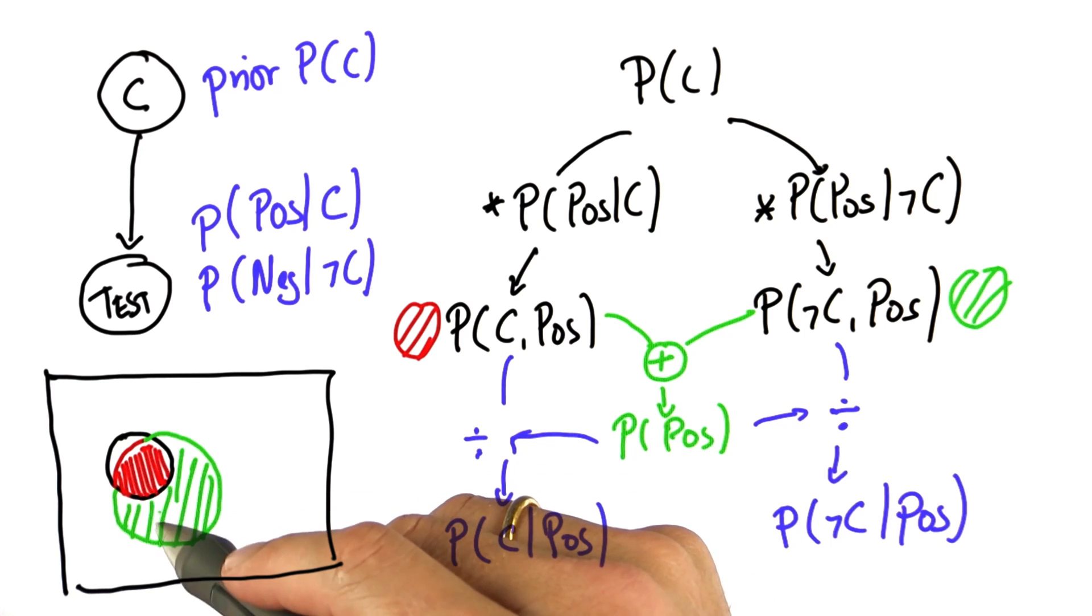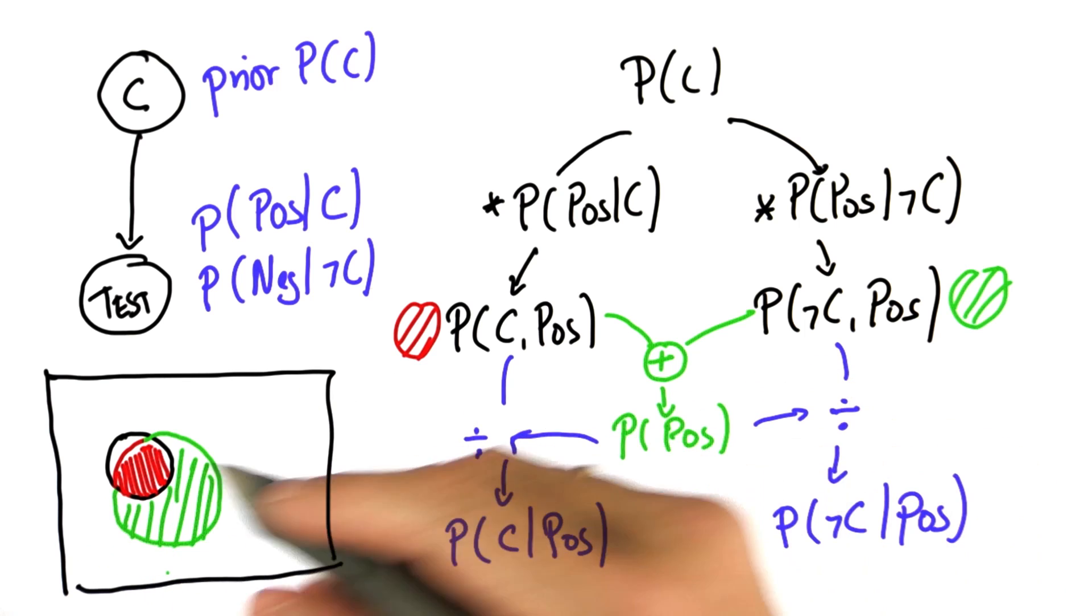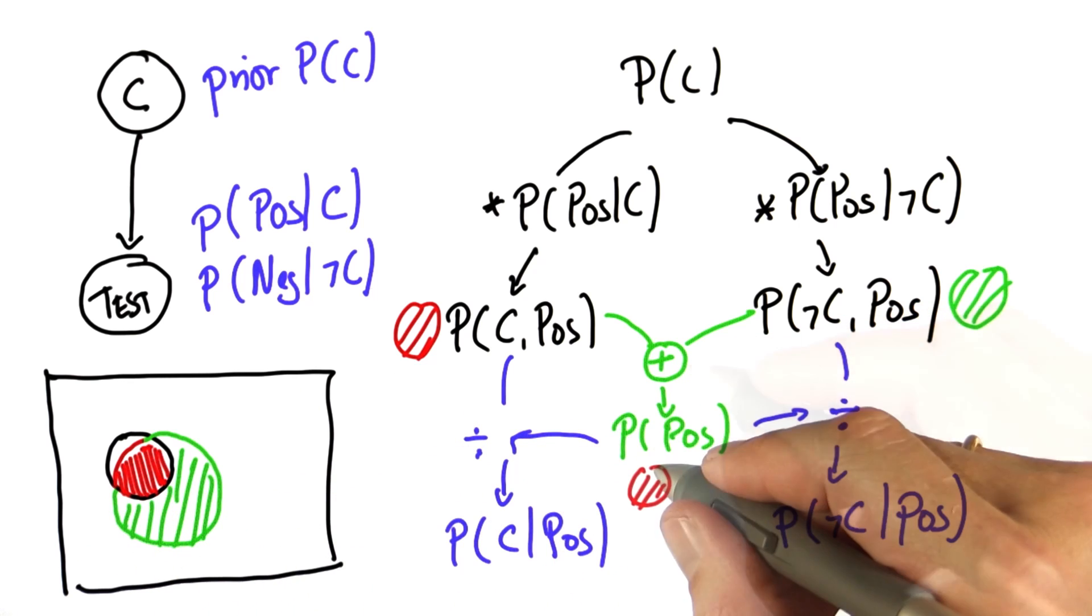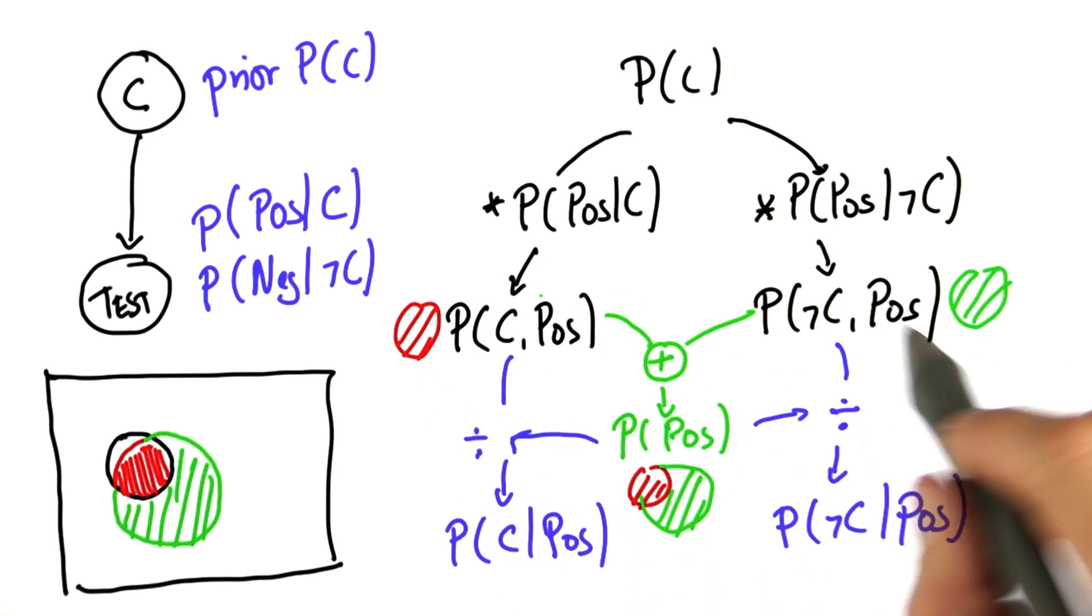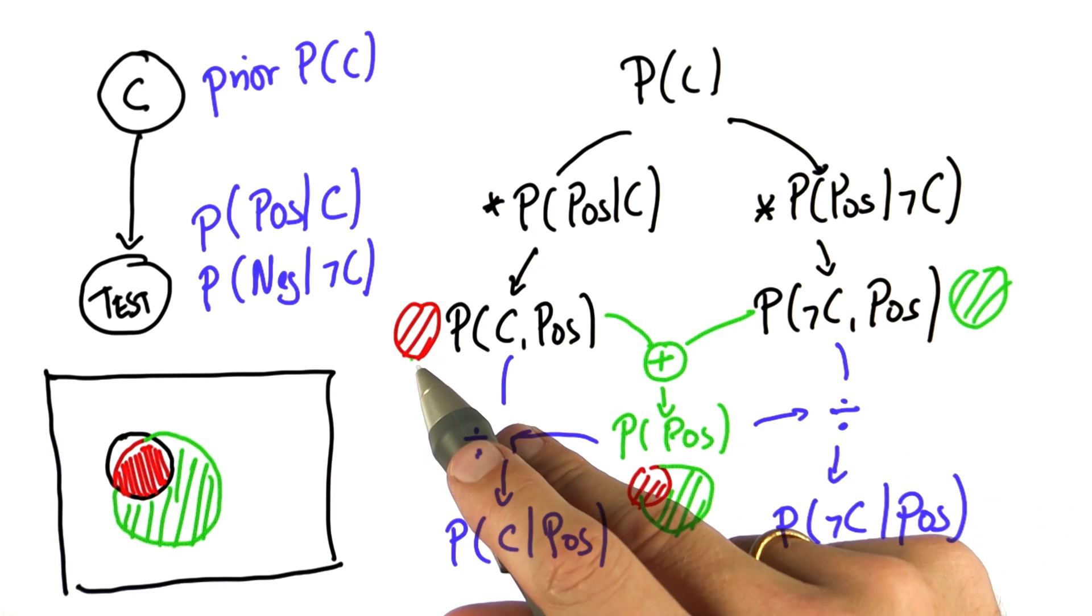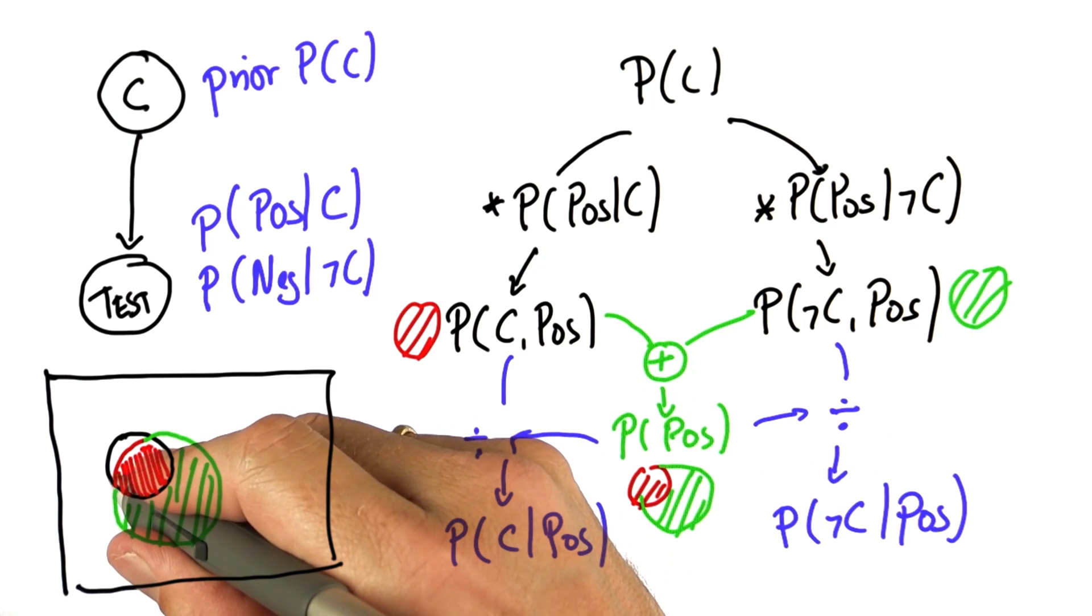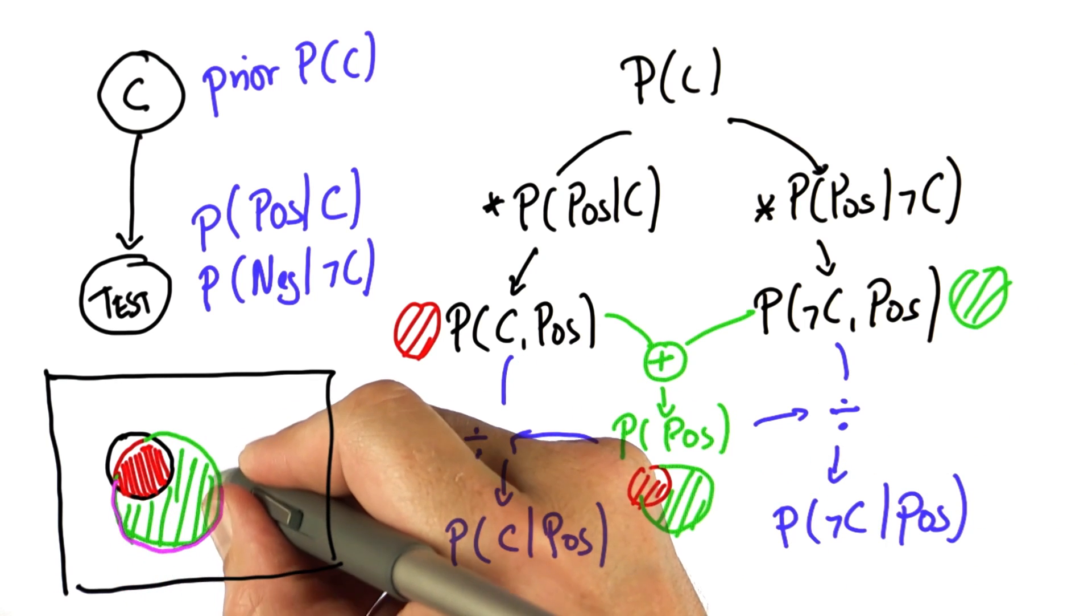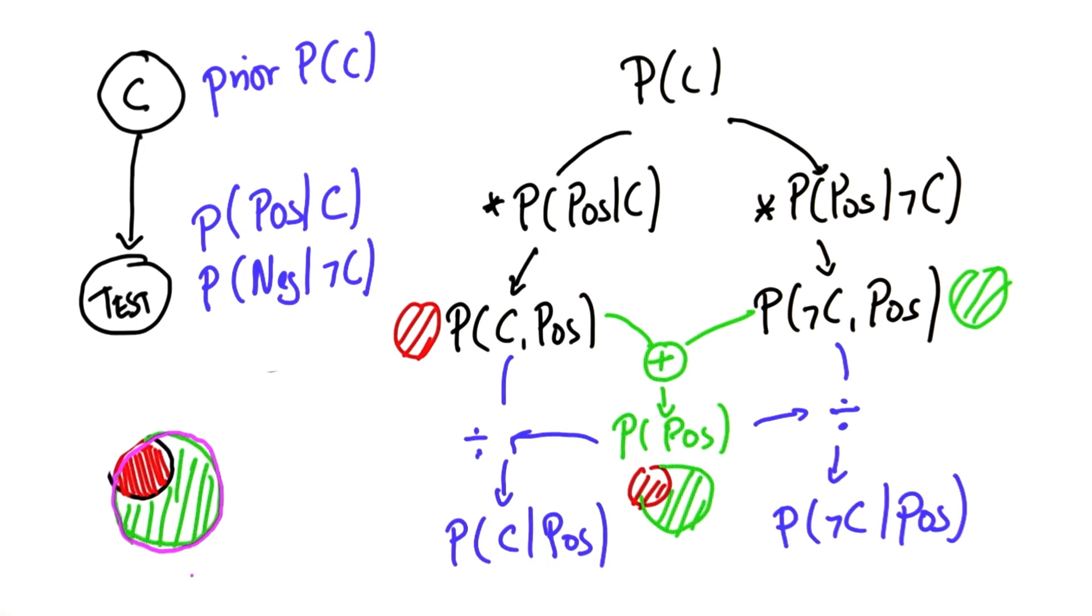But then we noticed that these two areas don't add up to one. The reason is there's lots of stuff outside. So we calculated the total area, which was this expression over here. And then we normalized these two things by the total area to get the relative area that is assigned to the red thing versus the green thing. And it was done by just dividing by the total area in this region over here, thereby getting rid of any of the other cases.